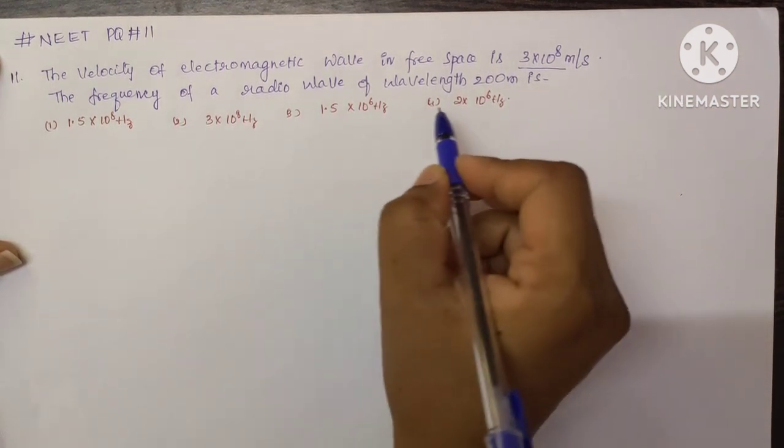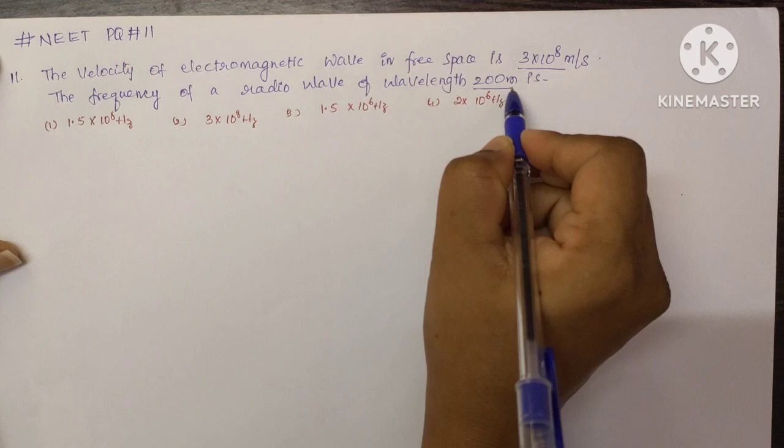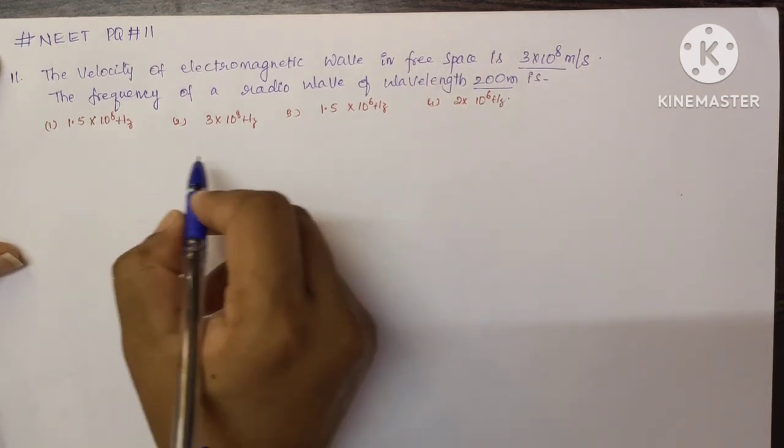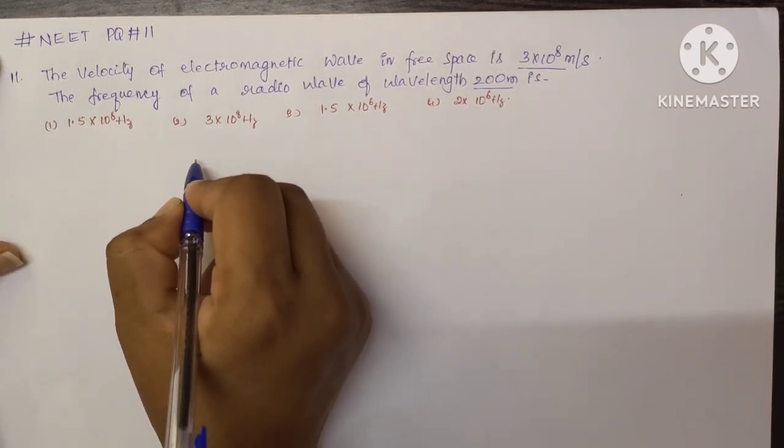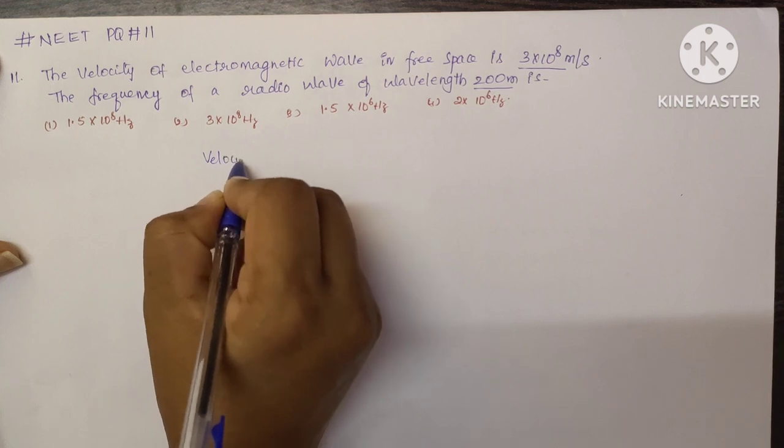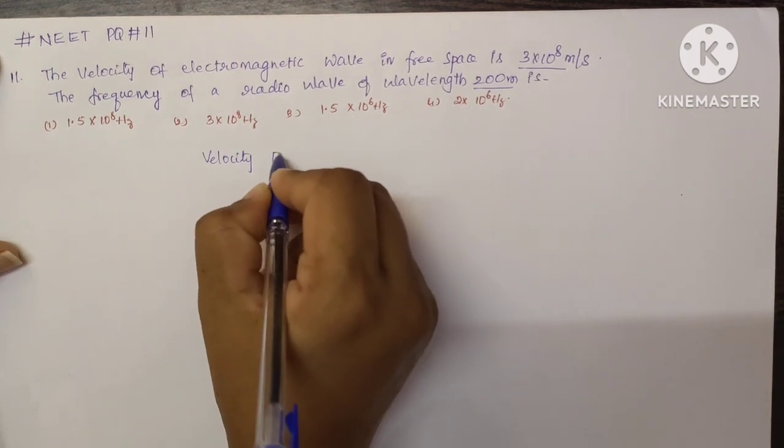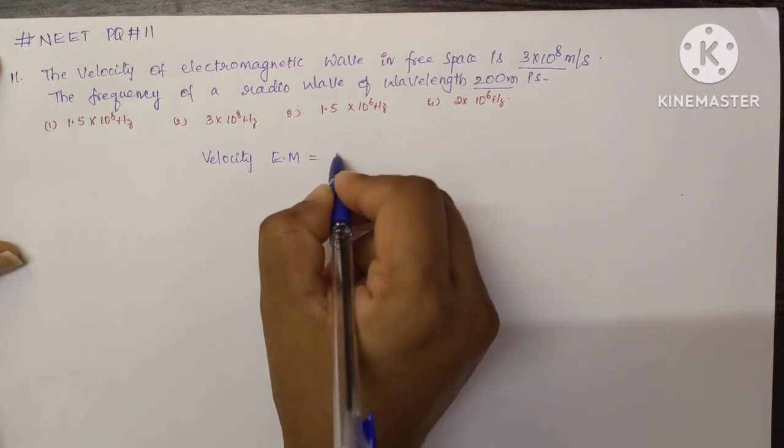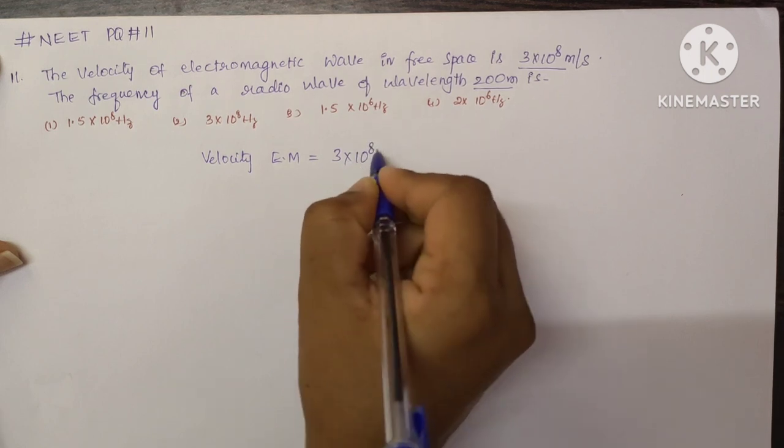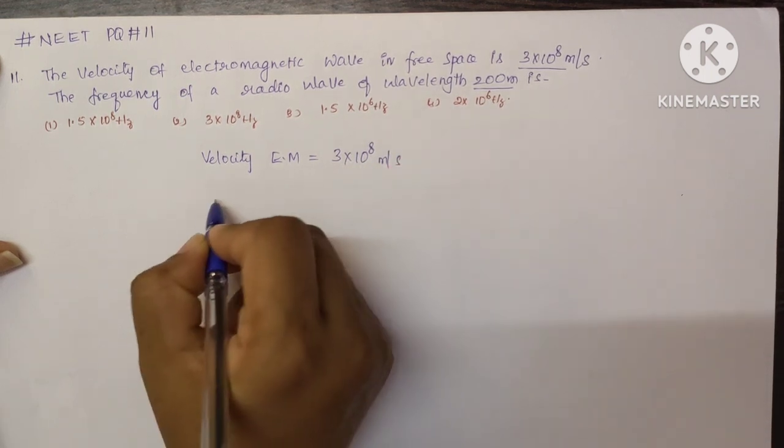The frequency of a radio wave of wavelength 200 meters is? Here, given that the velocity of the electromagnetic wave is equal to 3×10⁸ meters per second, and the wavelength...